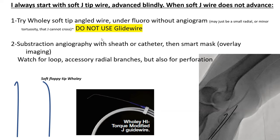I try to advance that. Most often this would go. It may be that the patient has a small artery, or it may be that he has mild tortuosity that the J-tipped could not cross, but the soft woolly would cross.